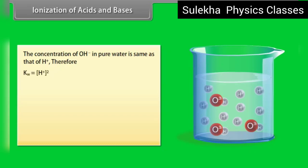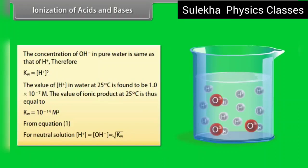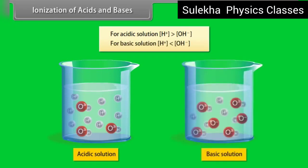The concentration of OH− in pure water is the same as that of H+. Therefore, Kw equals [H+]². The value of [H+] in water at 25°C is found to be 1.0 × 10⁻⁷ M. The value of the ionic product at 25°C is thus equal to 10⁻¹⁴ M². For a neutral solution, [H+] = [OH−] = √Kw. For an acidic solution, [H+] > [OH−]. For a basic solution, [H+] < [OH−].